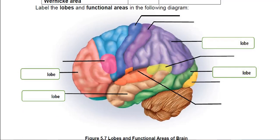Our next diagram labels the lobes of the brain. The easy one is the frontal lobe — it's the front of the brain. On the side is the temporal lobe, essentially where you think of the temples on your head. The top side heading toward the back is the parietal lobe. In the very back is the occipital lobe. These correspond to skull bones — frontal, parietal, occipital, and temporal bones — they're in the same locations.